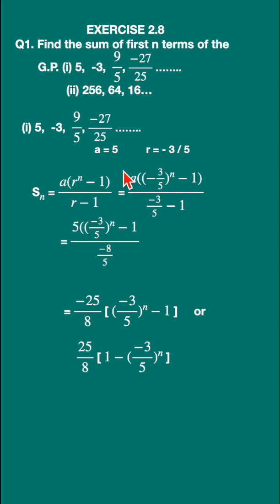So substitute these values: a equals 5 and r equals minus 3 upon 5 here in this formula. Now carefully simplify the denominator. This will be minus 3 minus 5 upon 5, that is minus 8 upon 5.